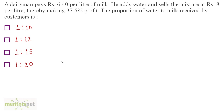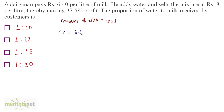A dairyman pays Rs. 6.40 per liter of milk. He adds water and sells this mixture at Rs. 8 per liter, thereby making 37.5% profit. The proportion of water to milk received by the customers is — let us assume the dairyman purchases 100 liters of milk. The cost price is 6.40 times 100, which equals Rs. 640. He then adds x liters of water.